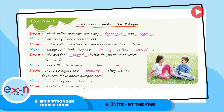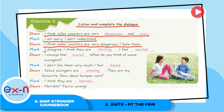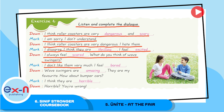Listen and complete the dialogue — a conversation between Dan and Mark. Dan: I think rollercoasters are very dangerous and scary. Mark: I'm sorry, I don't understand. Dan: I think rollercoasters are very dangerous — I hate them. Mark: I disagree. I think they are thrilling. I feel excited. Dan: I always feel scared. What do you think of wave swingers? Mark: I don't like them very much. I feel bored. Dan: Wave swingers are amazing — they are my favorite. Mark: How about bumper cars? I think they are horrible. Dan: Horrible? You are wrong.